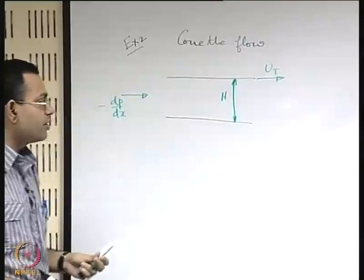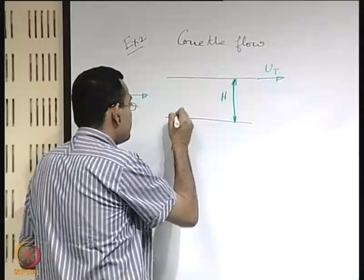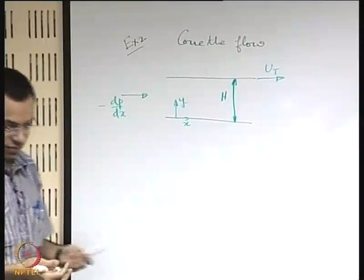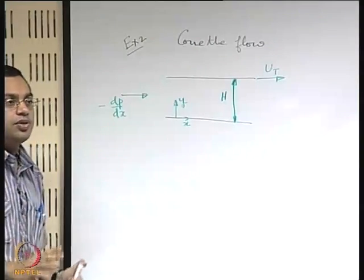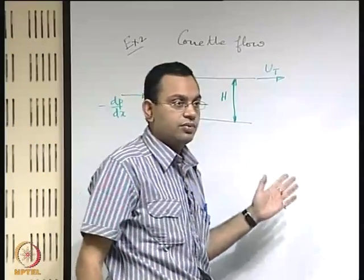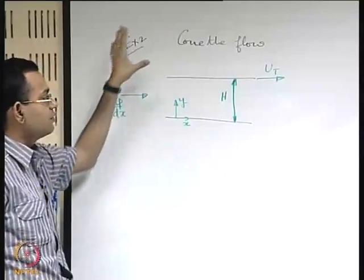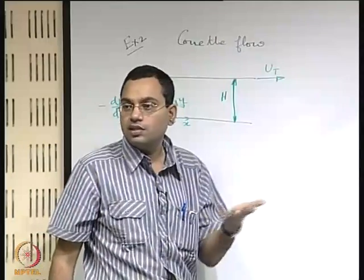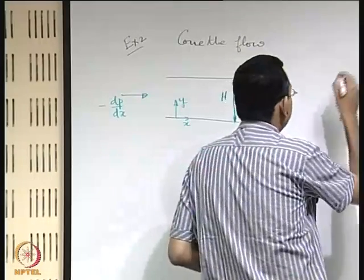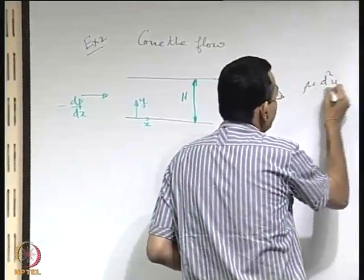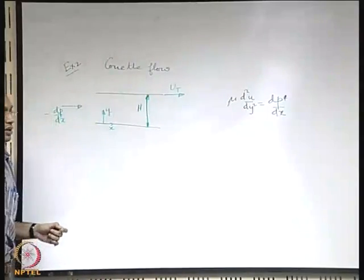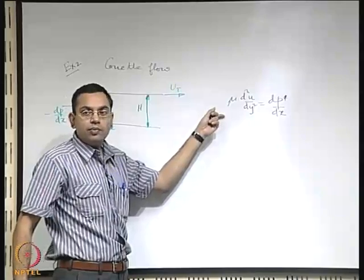Let us set up a coordinate system with y-axis and x-axis and write the equations of motion. We keep all the assumptions from the plane Poiseuille flow: steady flow, constant properties, fully developed, and incompressible. With these considerations, the governing equation is mu * d²u/dy² = dp*/dx. For this problem, what has changed is only the boundary condition — the governing equation remains the same.